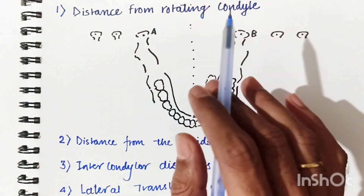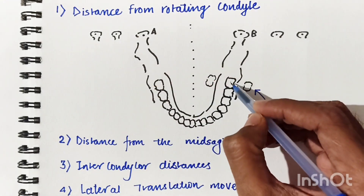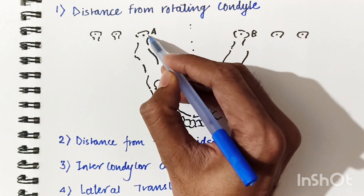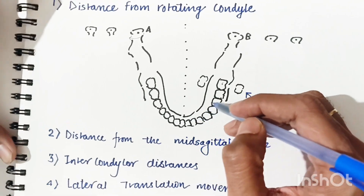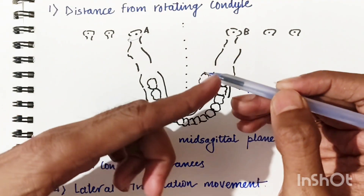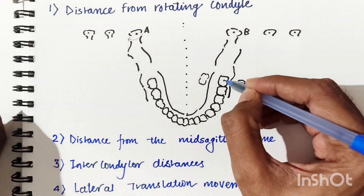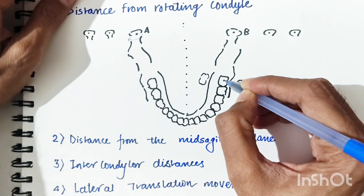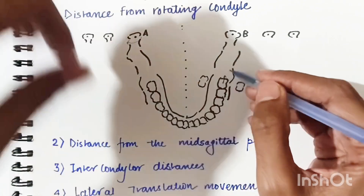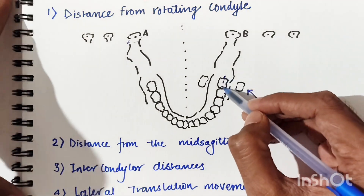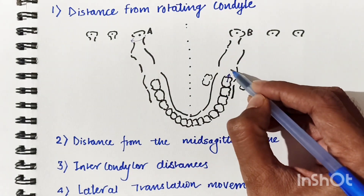The first horizontal determinant is the distance from the rotating condyle. Suppose we have a molar and point A is the rotating condyle. As the mandible rotates, the tip of the maxillary molar cusp traces a path. This path represents the mediotrusive movement direction.